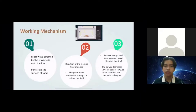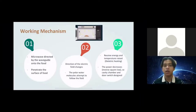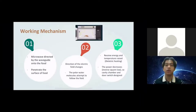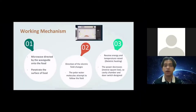As these molecules change direction quickly — about at least a million times per second — they receive energy and raise the temperature. This process is known as dielectric heating. The power of the microwave decreases according to the inverse square law, so the cooking chamber is designed to maximize the heating effect. Most microwave ovens also have a door switch that prevents the process from starting until the door is completely closed.